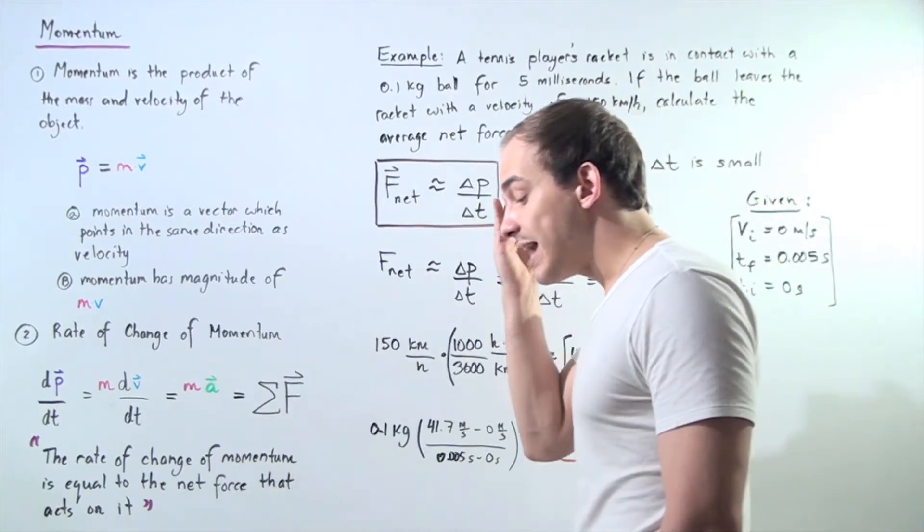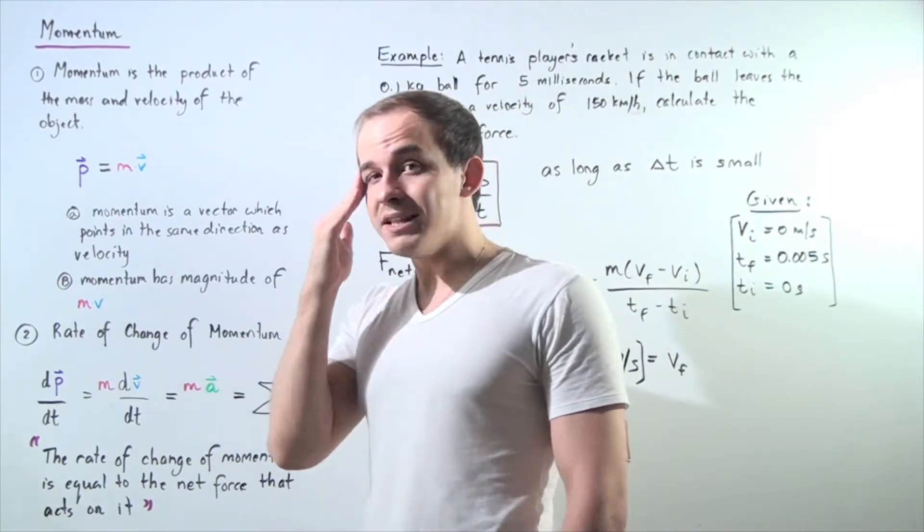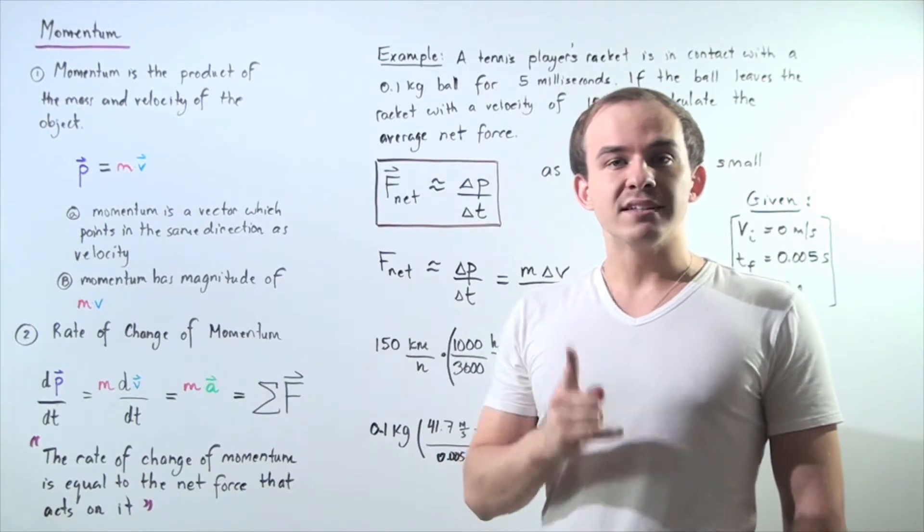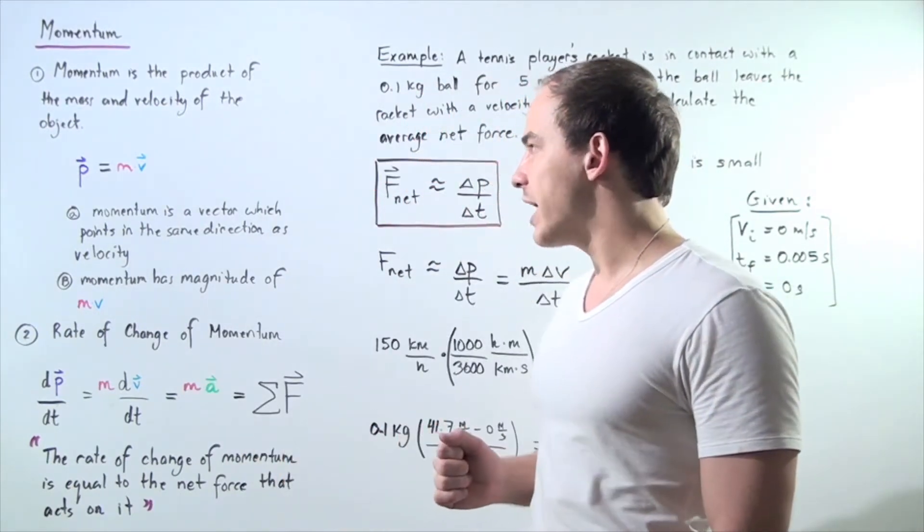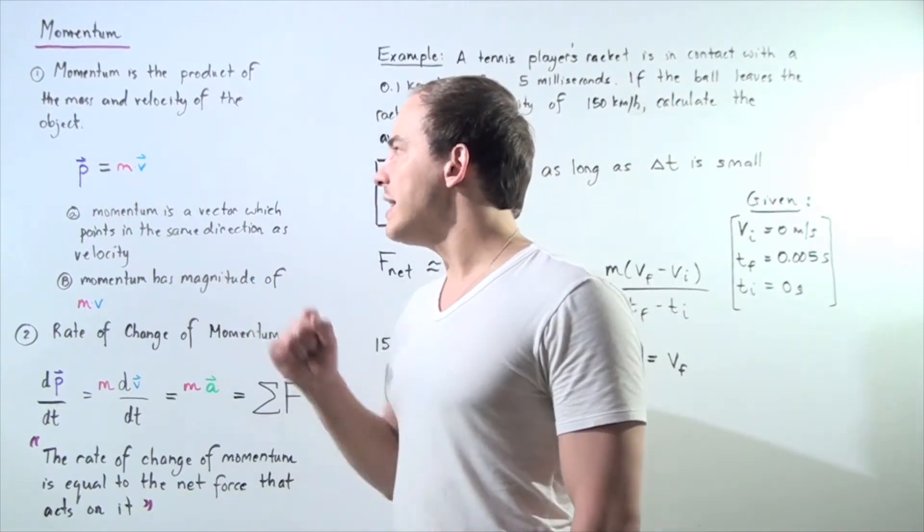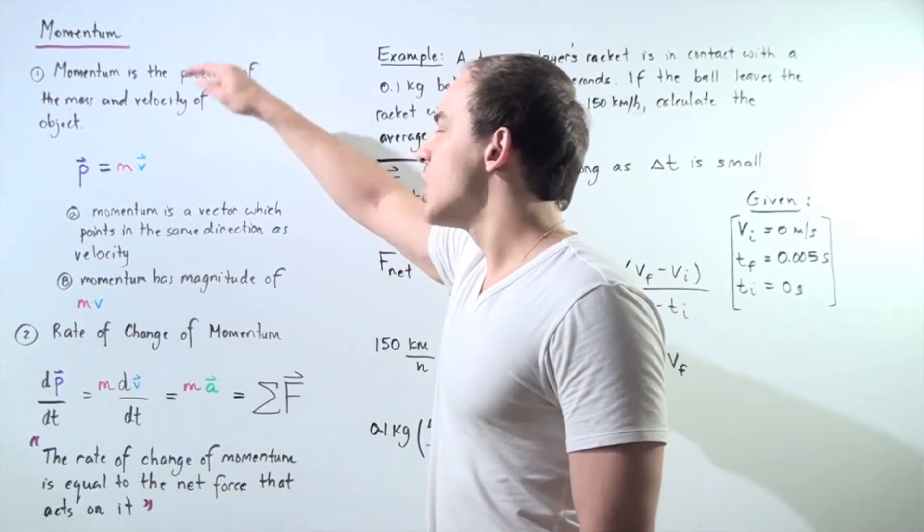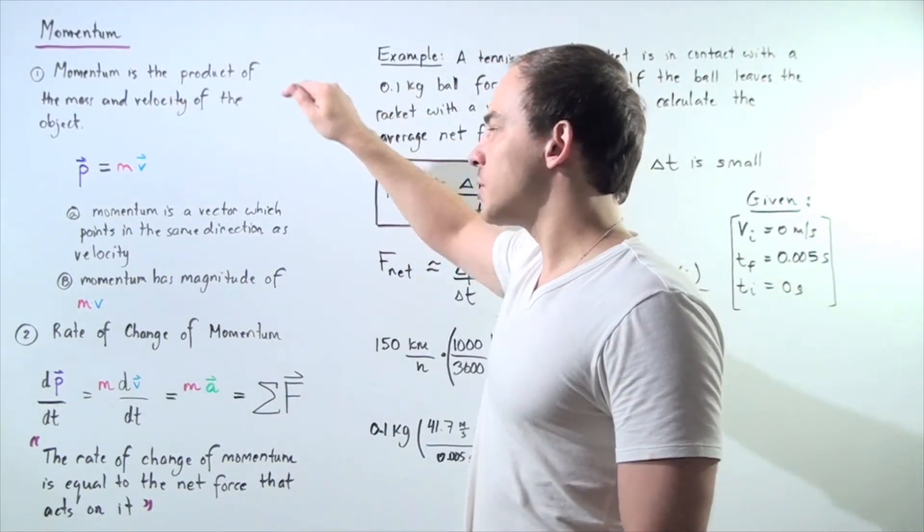If we want to calculate the magnitude of momentum, we simply take the magnitude of velocity and multiply by the mass of that object. The units of momentum are simply kilograms multiplied by meters per second.